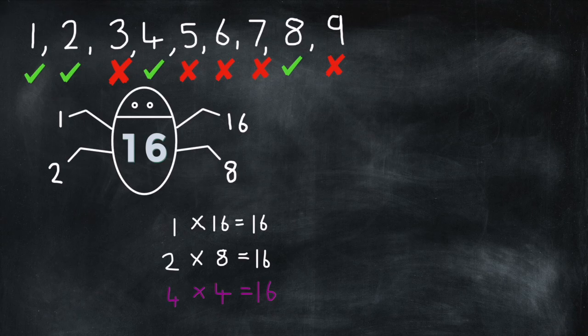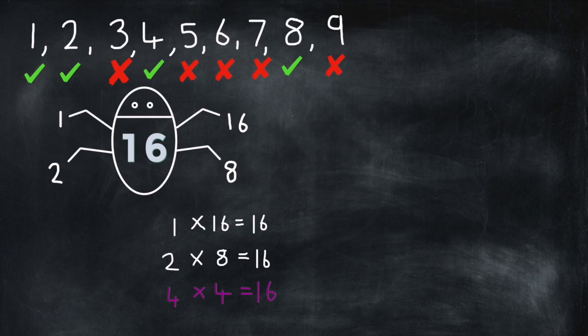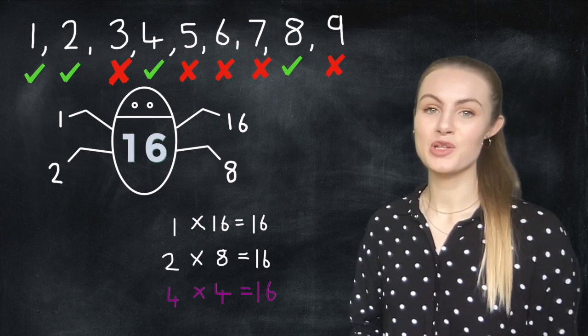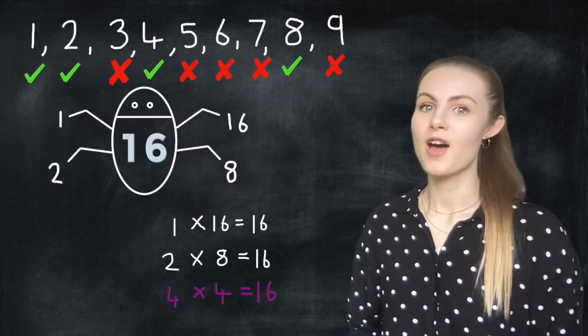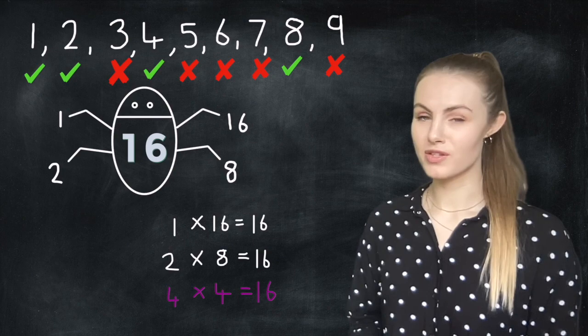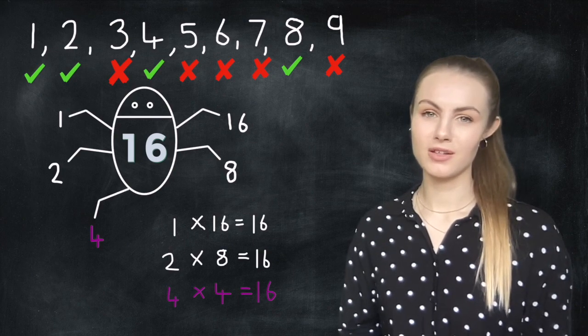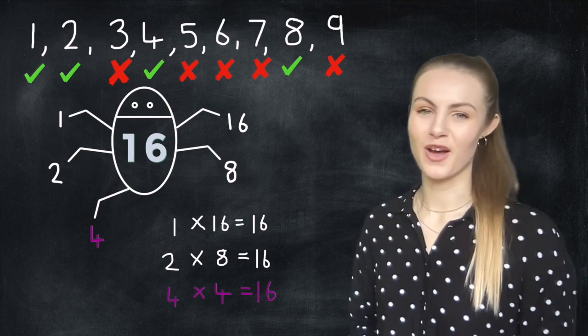We can now cross off any number bigger than 4 that we haven't already used because as we multiply 4 by 4 to get 16, it is like we've approached a number 4 from both ends of our number line. So when a number is multiplied by itself all you have to do is put that number in once. You don't need to put it in twice. So you end up with a bit of a wonky bug but it's kind of cute so it's fine.